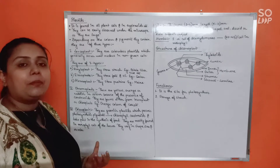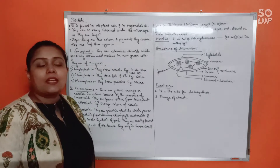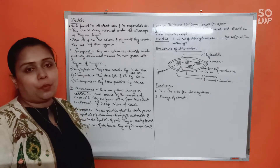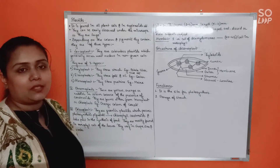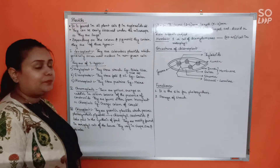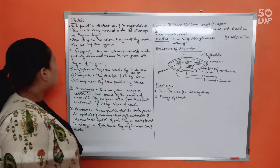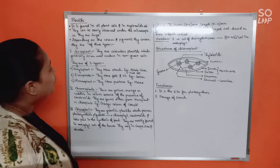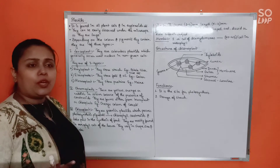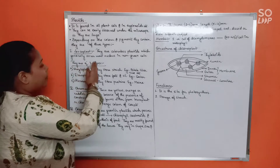Based on the color or pigment they possess, plastids are of three types: first is leucoplast, then chromoplast, and most importantly chloroplast. Starting with leucoplasts - they are colorless plastids, generally occurring near the nucleus in non-green cells, and they store various substances.